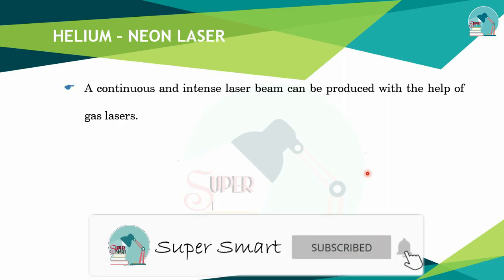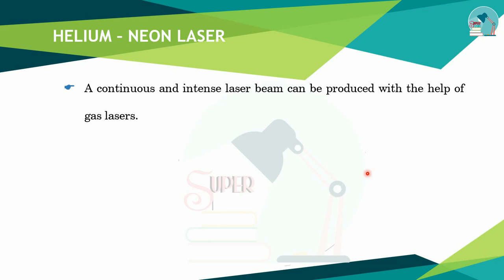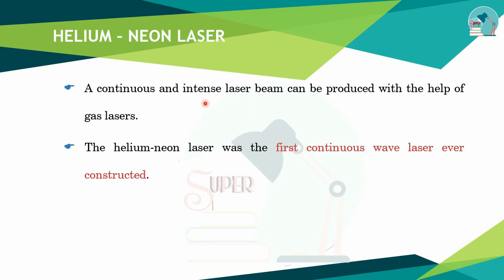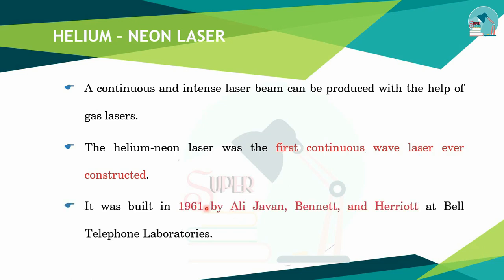Next, we have the Helium-Neon laser, which is a gas laser. This gas laser produces a continuous and intense laser beam. It is the first continuous wave laser, built in 1961 by Ali Javan and colleagues at Bell Telephone Laboratories.